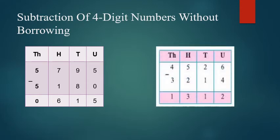Now the next sum: again you have to arrange the numbers according to its places — that is in the 1000s, 100s, 10s and units. Then subtract units from units, 10s from 10s, 100s from 100s and 1000s from 1000s. Units place: 6 and 4. 6 minus 4, we get 2. 10s place: 2 and 1. 2 minus 1 is 1. 100s place: 5 and 2. 5 minus 2 is 3. 1000s place: 4 and 3. 4 minus 3 is 1. So your answer is 1312.